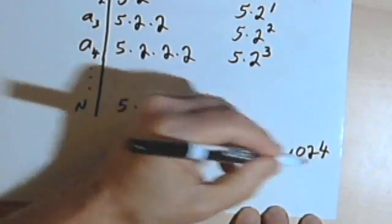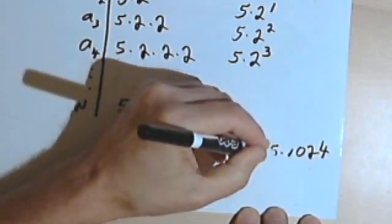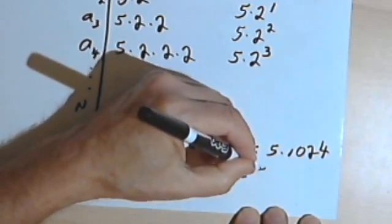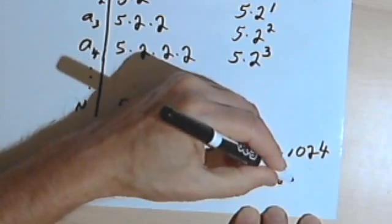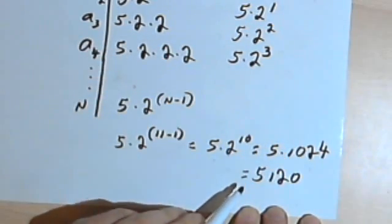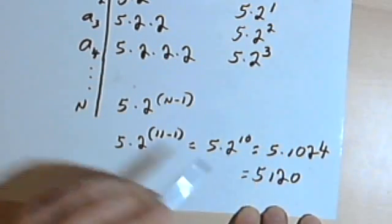So 5 times 1,024. And now if I multiply 5 times 1,024, let's see. Well, 5 times 1,000 is 5,000. And 5 times the 24 is 120. So term number 11, or a sub 11, would be 5,120.